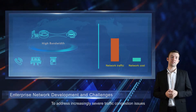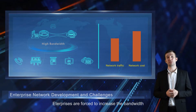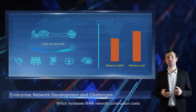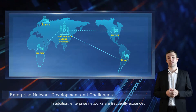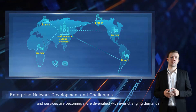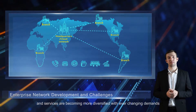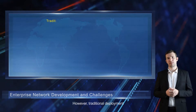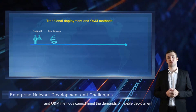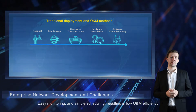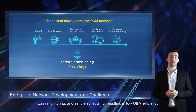To address increasingly severe traffic congestion issues, enterprises are forced to increase the bandwidth, which increases WAN network construction costs. In addition, enterprise networks are frequently expanded and services are becoming more diversified with ever-changing demands. However, traditional deployment and O&M methods cannot meet the demands of flexible deployment, easy monitoring, and simple scheduling, resulting in low O&M efficiency.